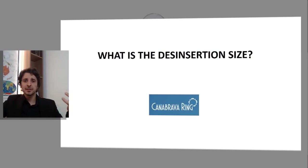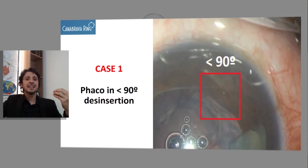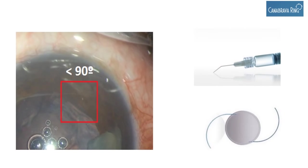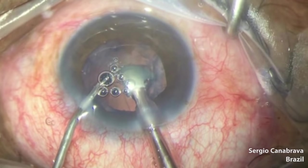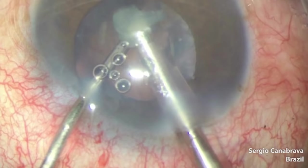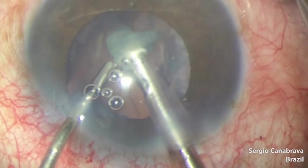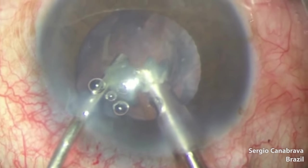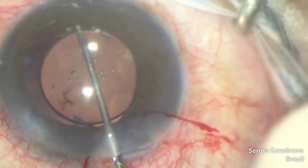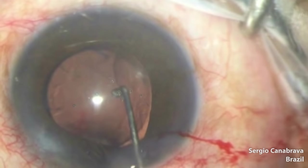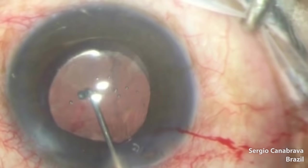The question: what is the disinsertion size? This is an important question. In case one — FACO in lower than 9 degrees disinsertion — you can use VSCO in your left hand when the bag comes to the tip, and a three-piece IOL. Let's go to the video. The VSCO now, when the bag comes to the tip — FACO again. When the bag comes to the tip, insert the OVD in the left hand. In this case, lower than 9 degrees, you don't need a Capsular Tension Ring. Pay attention: insert the three-piece IOL in the SISC-Hook and capture the optical zone in the bag.